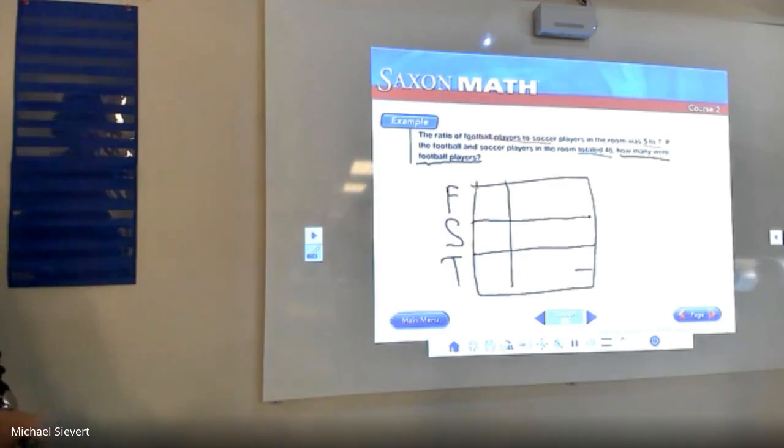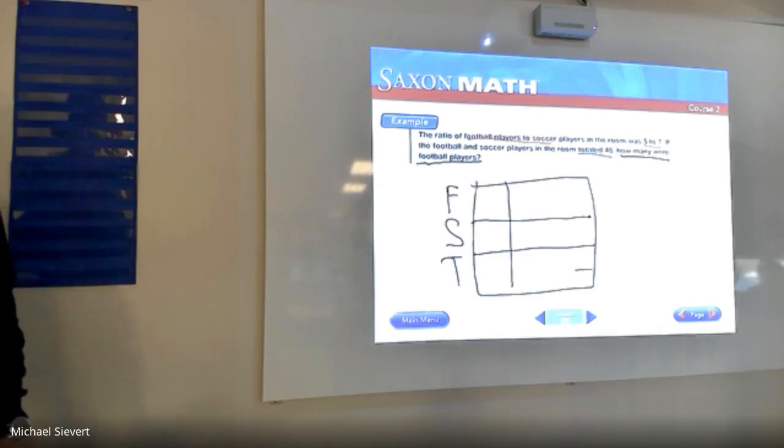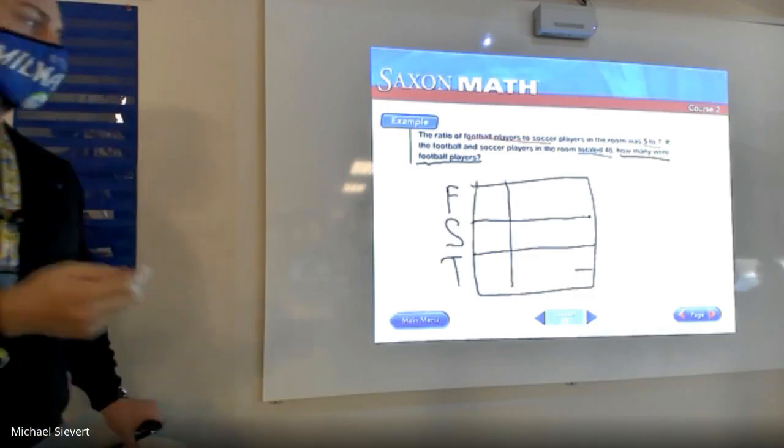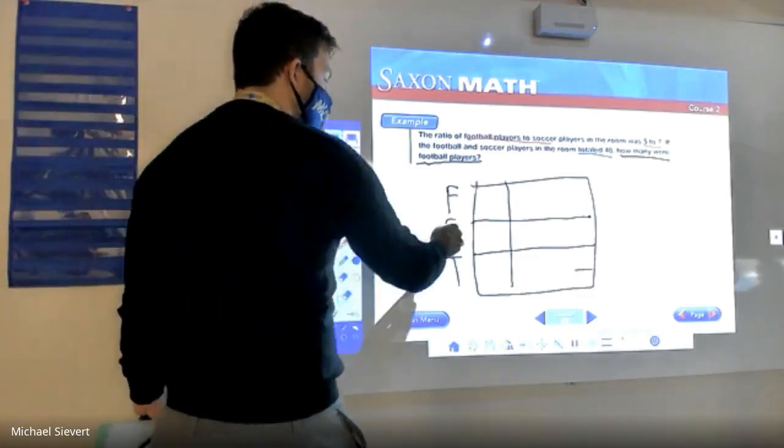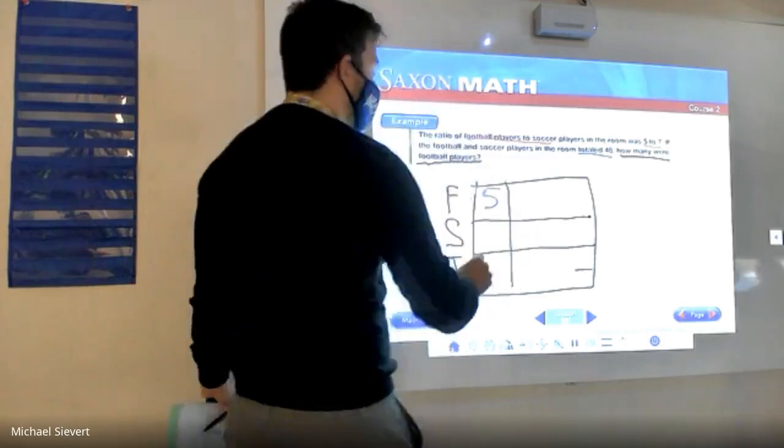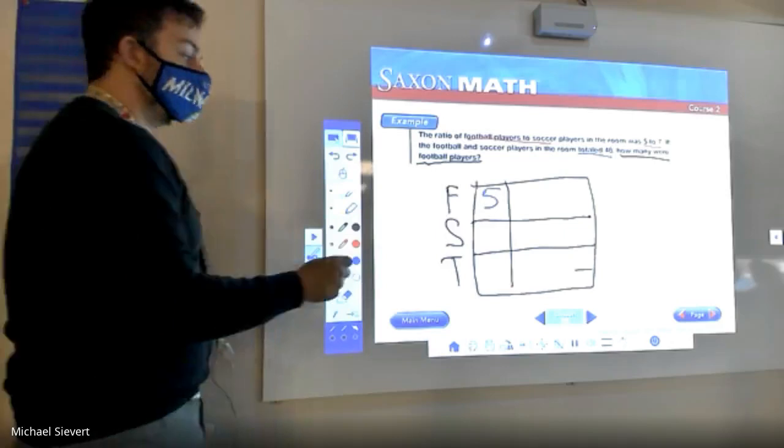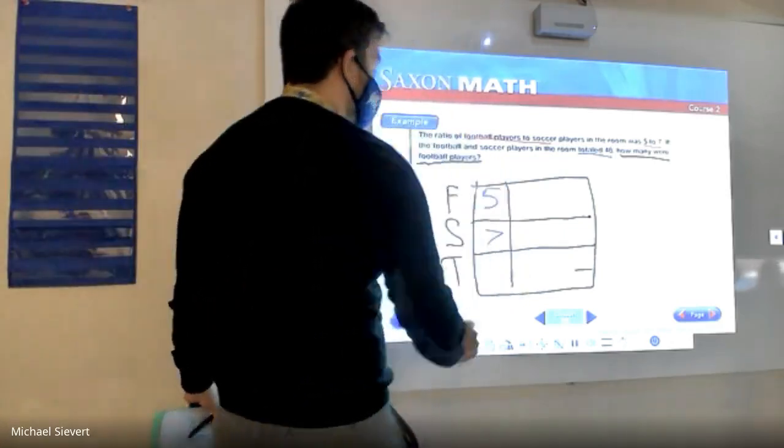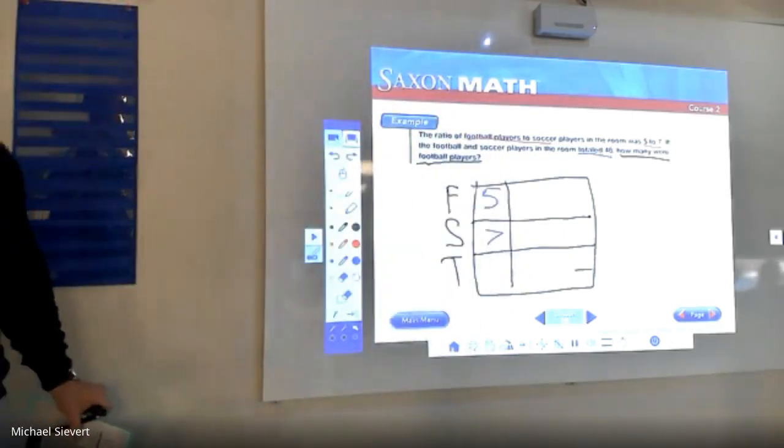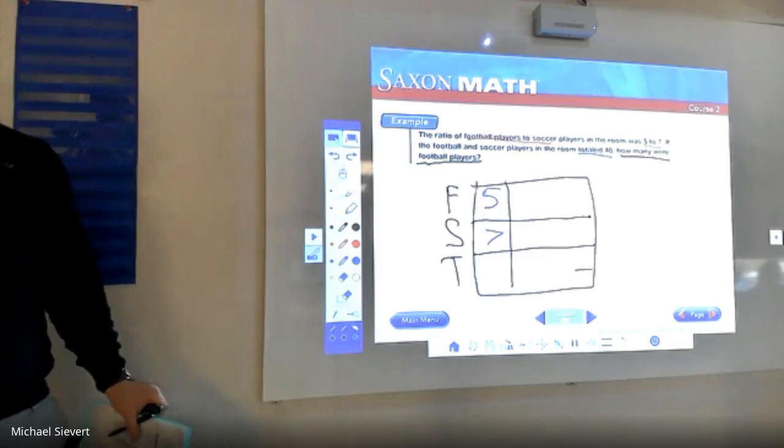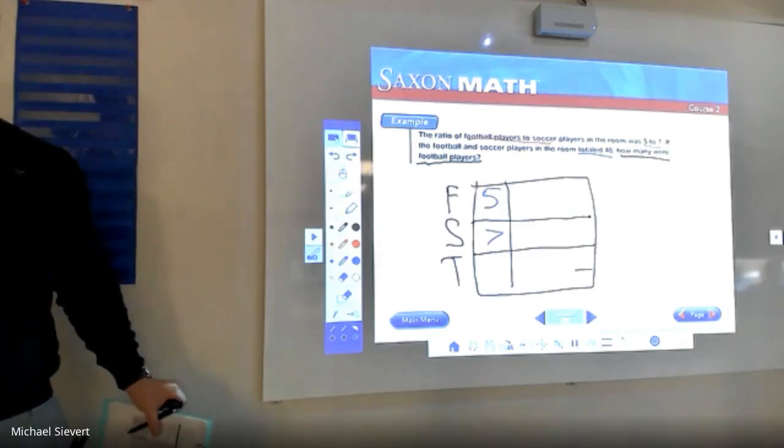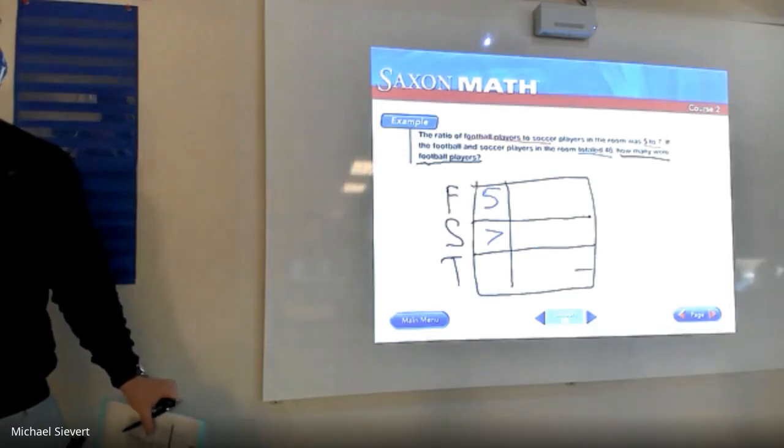With a strong style hand, how many football players to soccer players? What's that number? Five. So you put a five in the first block. How many soccer players to football players? Seven.